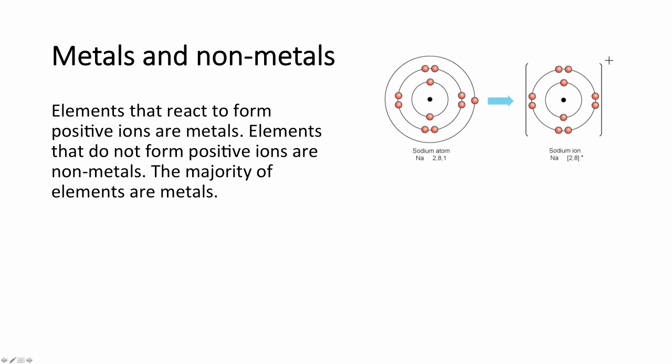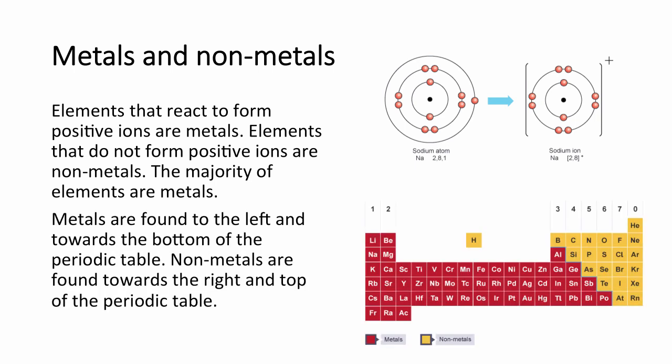The majority of elements in the periodic table are metals, which can be found to the left. There is a staircase shape that starts with aluminium and works its way down. A good tip is to draw the staircase on the periodic table before the exam — anything to the left or under the stairs is a metal.